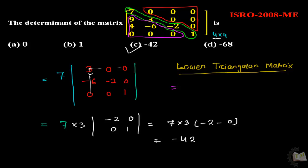To calculate the determinant of a lower triangular matrix, we simply multiply the diagonal elements. Here the diagonal elements are 7 into 3 into minus 2 into 1. Your answer will be minus 42.